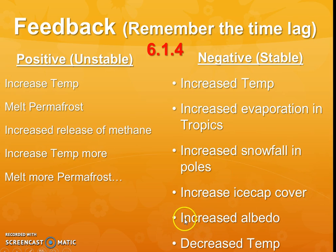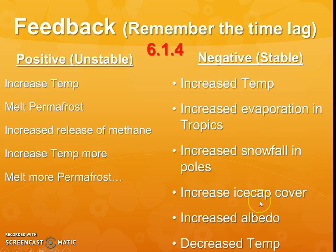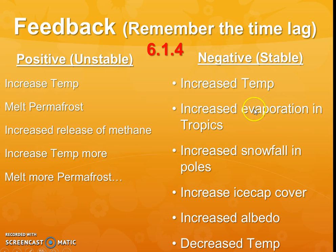That ice cap increase will hopefully increase reflectivity, which is called albedo. That ice will reflect light like glass or a mirror would. That reflection of light — versus holding the energy in like blacktop or soil would — will decrease temperature, which will then cause this whole process to slow and stabilize at a normal temperature. So instead of spiraling out of control, this one has a little bit of an increase and then the system stabilizes by bringing itself back down to equilibrium temperature.